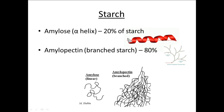Amylose comprises 20% of starch, and amylopectin comprises about 80% of it. Amylose is quite compact and therefore can be stored in high quantities. Amylopectin is much more branched and is used for quick energy release because of the branching, which means that glucose can be quickly separated off.